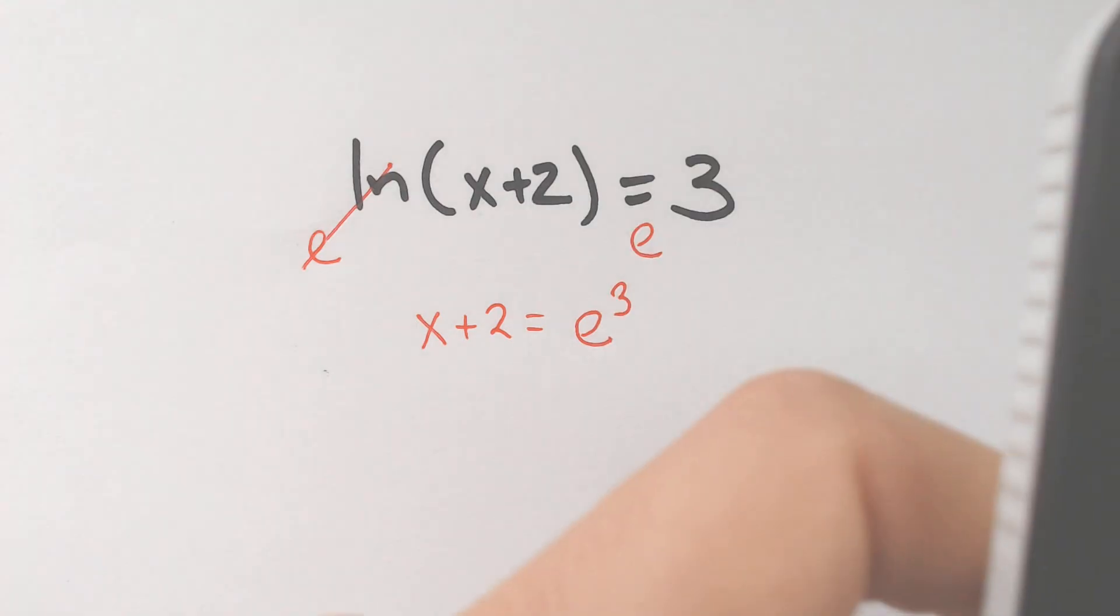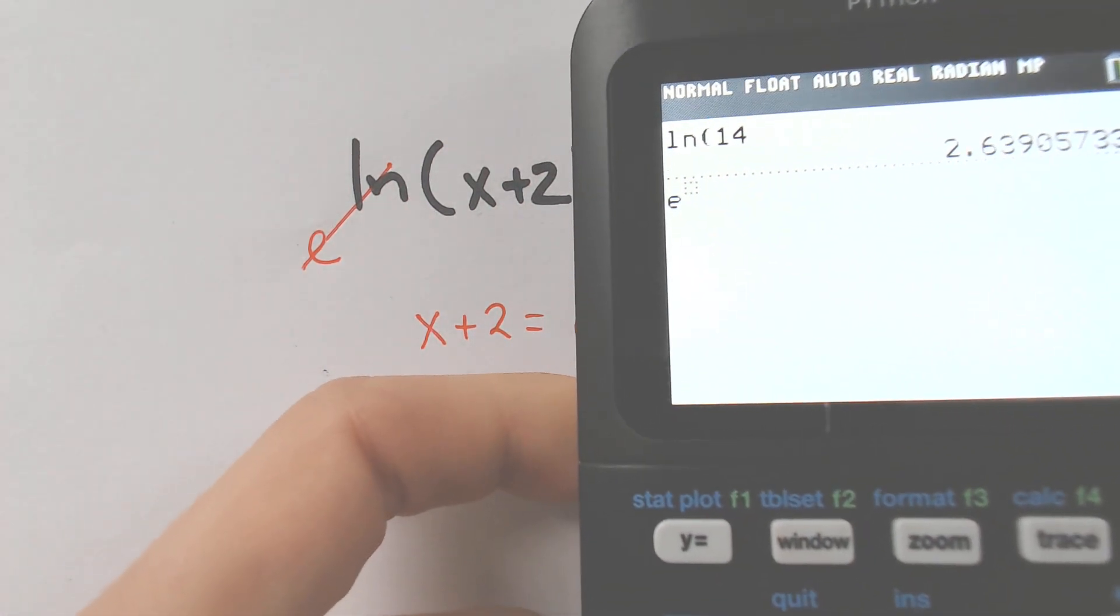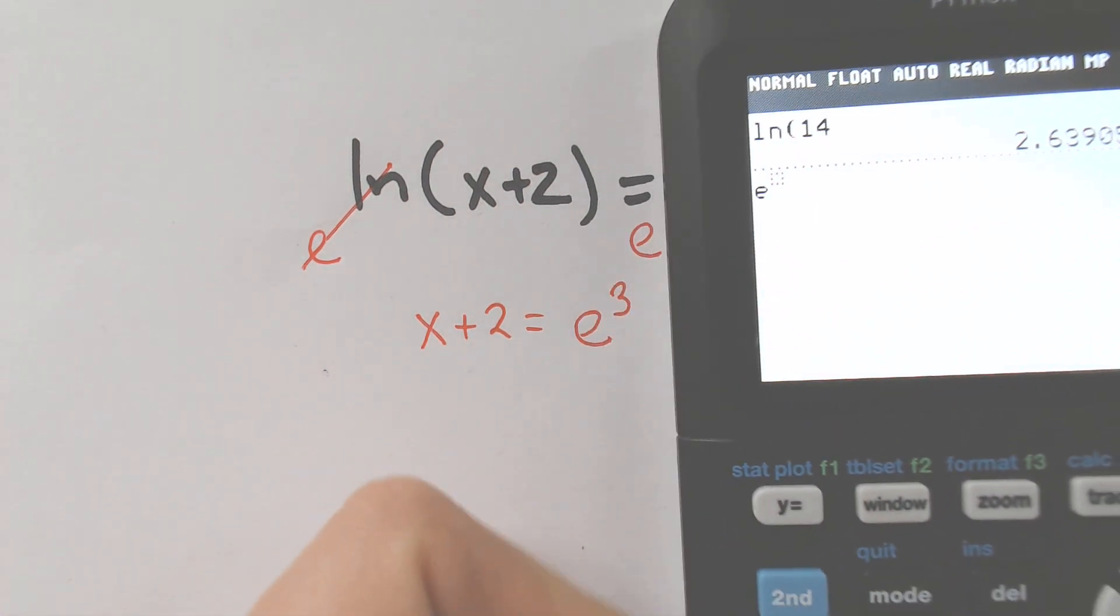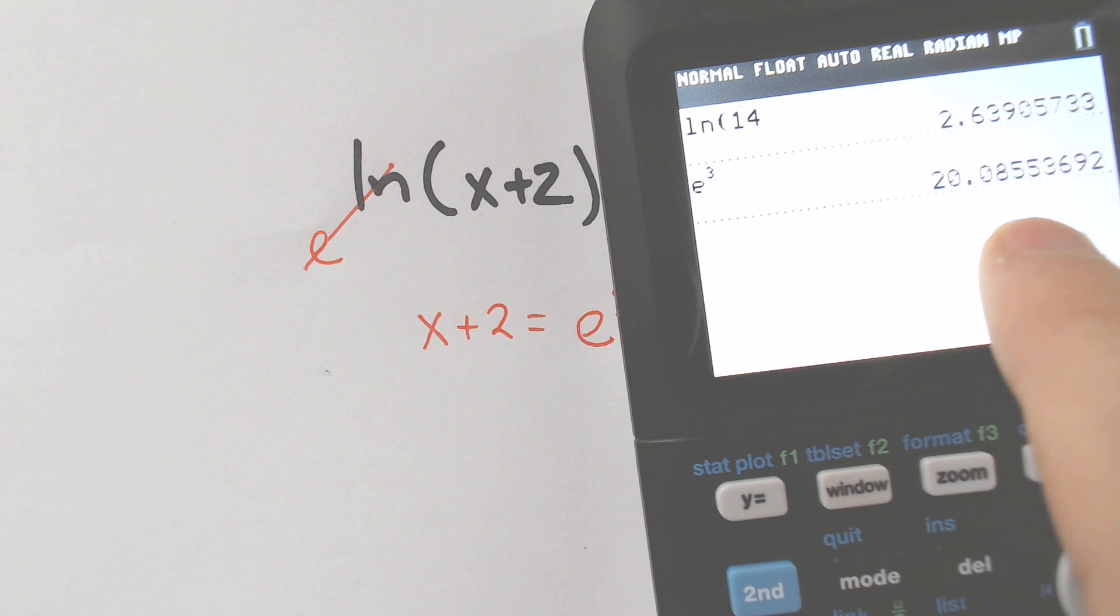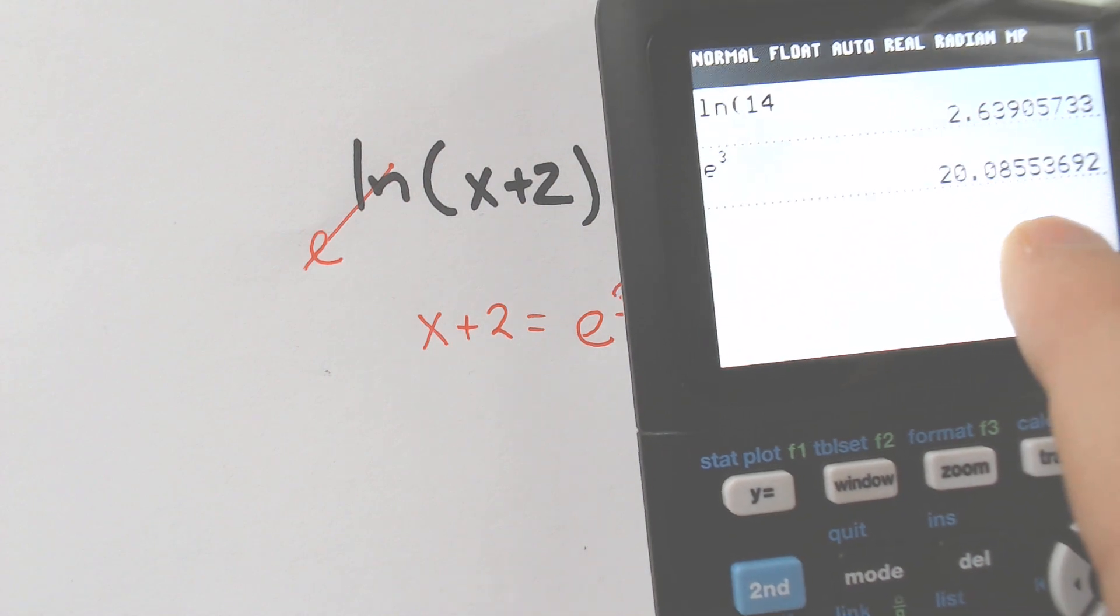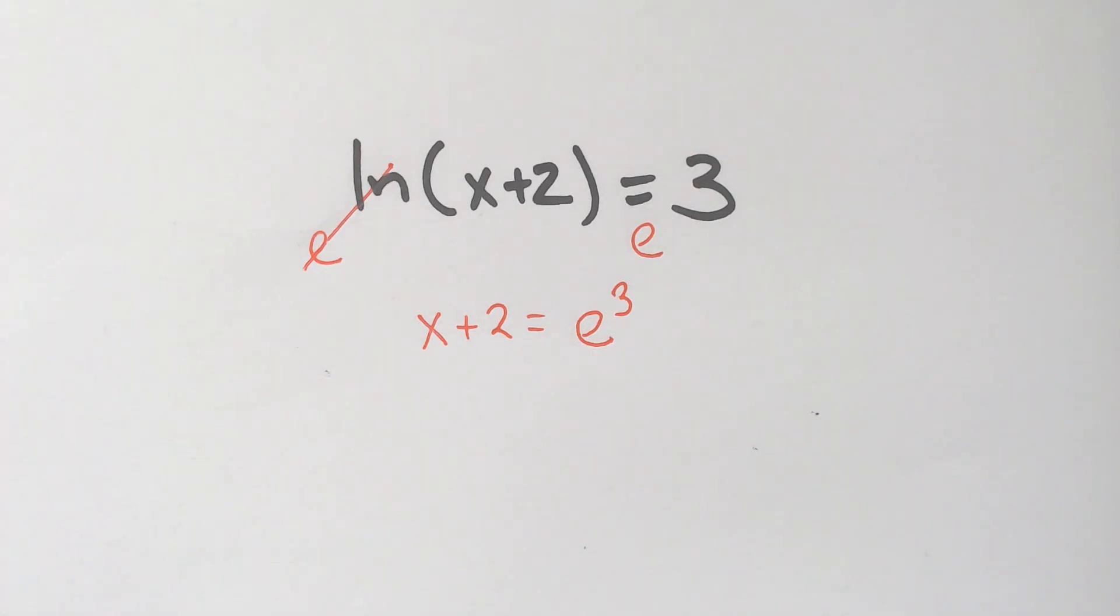if you hit shift LN or second LN on any calculator, it automatically prompts you E to what power? Well, we want E to the third power. And you hit equals. You keep this stored in your calculator. Keep that stored in your calculator because we're not done yet.